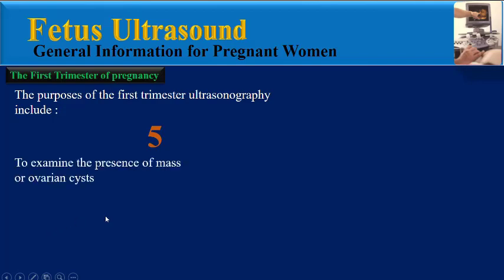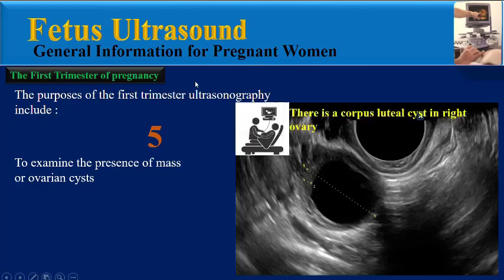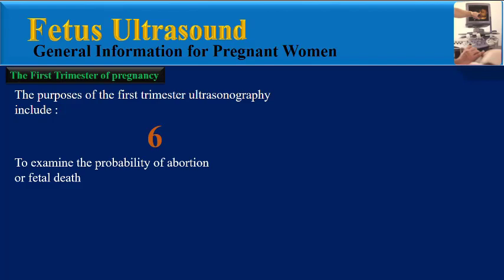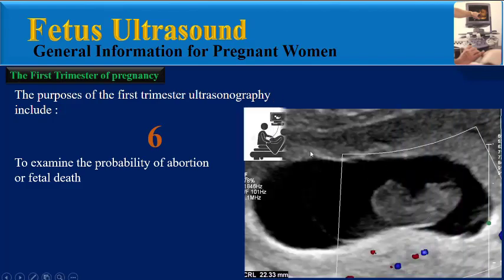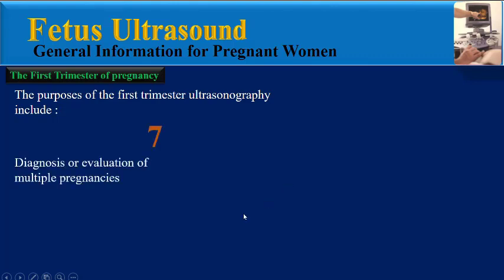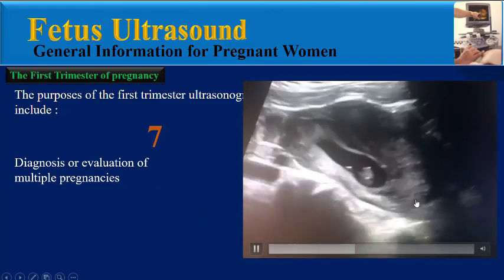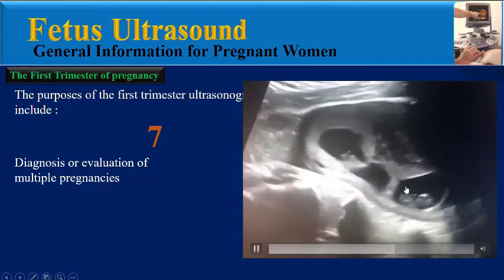The fifth purpose is to examine the presence of a mass or ovarian cysts, like this transvaginal ultrasound image where the physician reports: there is a corpus luteum cyst in the right ovary. The sixth purpose is to examine the probability of abortion or fetal death, like this image where the physician reports: I don't see a fetal heartbeat and the fetus is unfortunately dead.